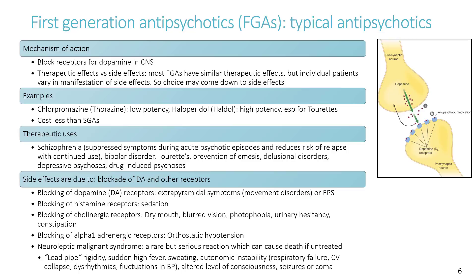There are two generations of antipsychotics. First-generation (typical) antipsychotics strongly block dopamine receptors — they are dopamine antagonists. Most first-generation antipsychotics have similar therapeutic effects, but individual patients may respond differently and develop different side effects. Switching between them is possible. They cost less than 10% of the cost of second-generation antipsychotics.